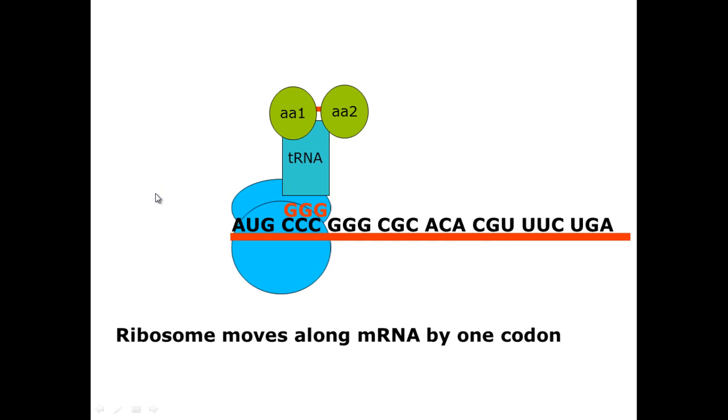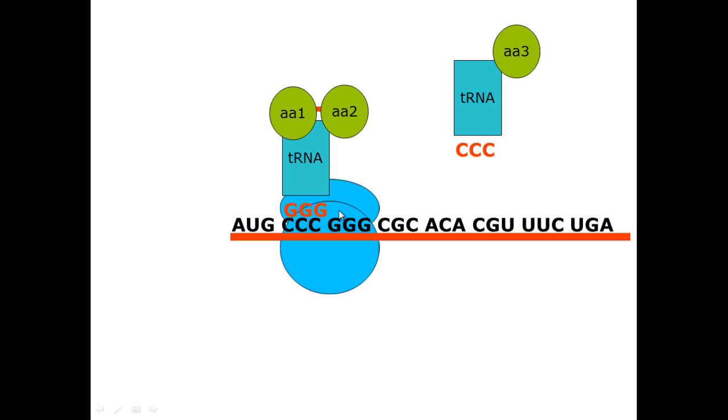You then get the ribosome moving along to read the code. Now it is looking for a transfer RNA that has an anticodon of CCC. Because they have a complementary shape with the codon, it comes in and it binds.